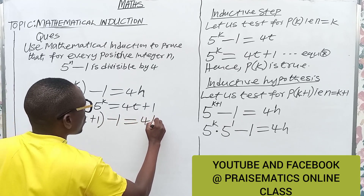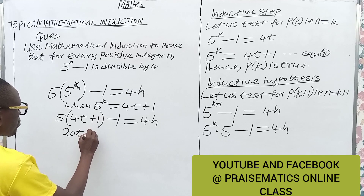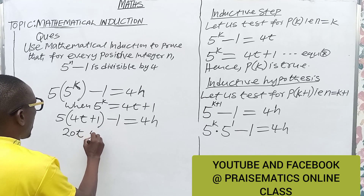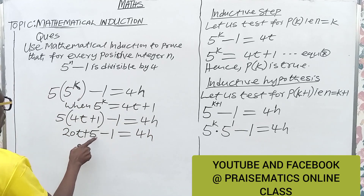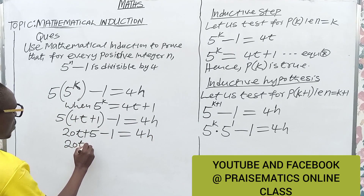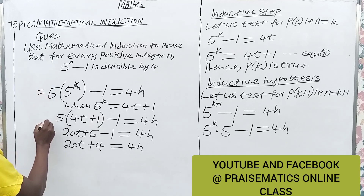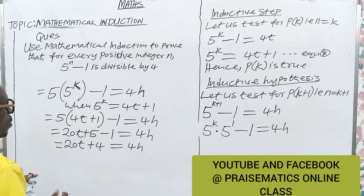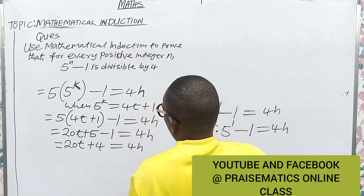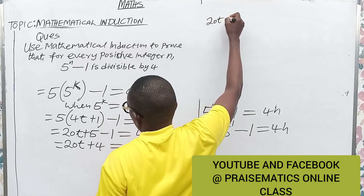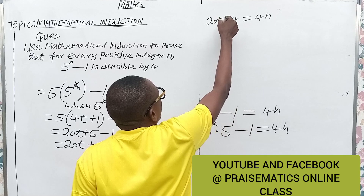Is it divisible by 4? Expanding this gives us 20t, and then 5 minus 1, giving 20t plus 4. Is it divisible by 4? Yes. We have 20t plus 4, and 4 is a common factor. We can write this as 4 into bracket 5t plus 1.